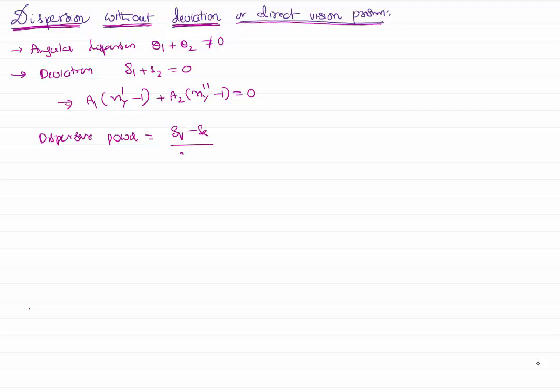If you write it in terms of refractive index, it will become something like refractive index of the violet color. This is the formula. If you notice the formula, what is there in the denominator is there in the formula. What is there in the numerator is missing in the formula. So I want to express it in terms of dispersive power.